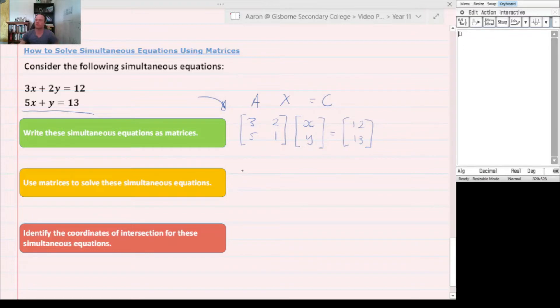So use matrices to solve these simultaneous equations. To solve these, we know from previous lessons that an inverse times itself is an identity matrix. If we take AX equals C, I'm going to multiply this side by A to the negative 1 and this side by A to the negative 1.